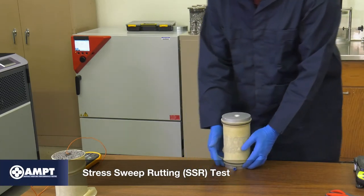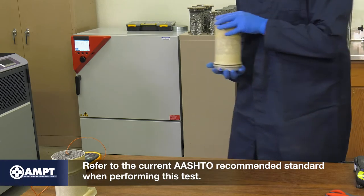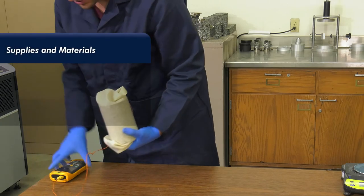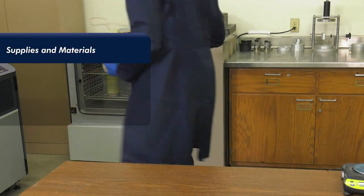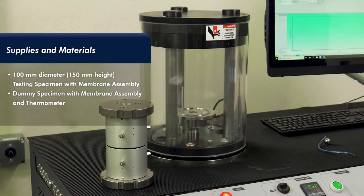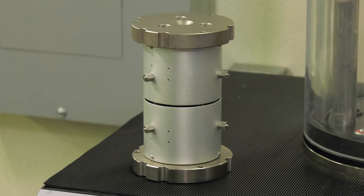Refer to the current AASHTO recommended standard when performing this test. Place both the testing and dummy specimens in the external environmental chamber until the dummy specimen reaches the test temperature. Refer to the recommended test temperatures given in the standard. Verify the calibration of the AMPT using a proving ring before beginning this test.